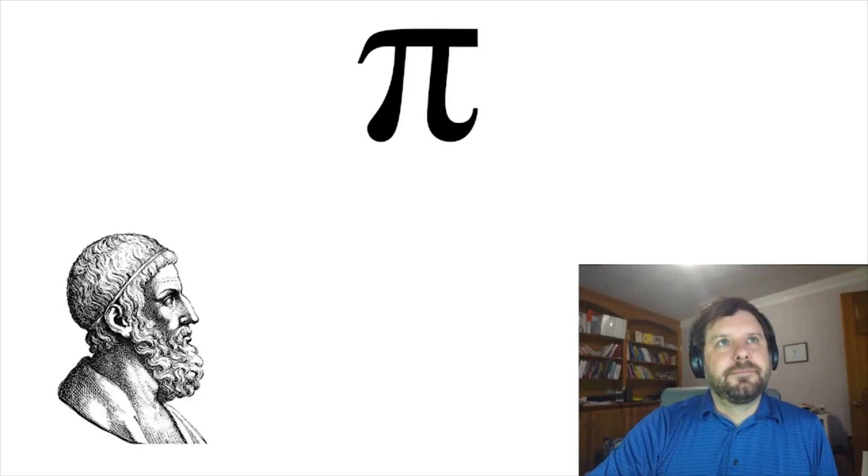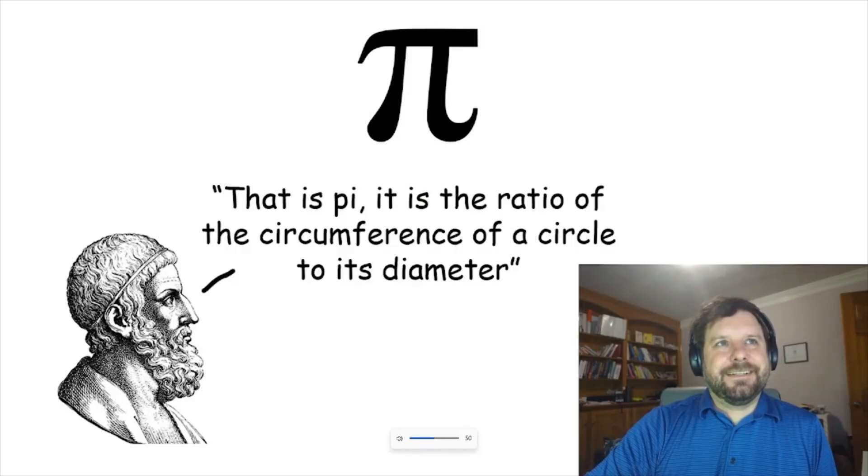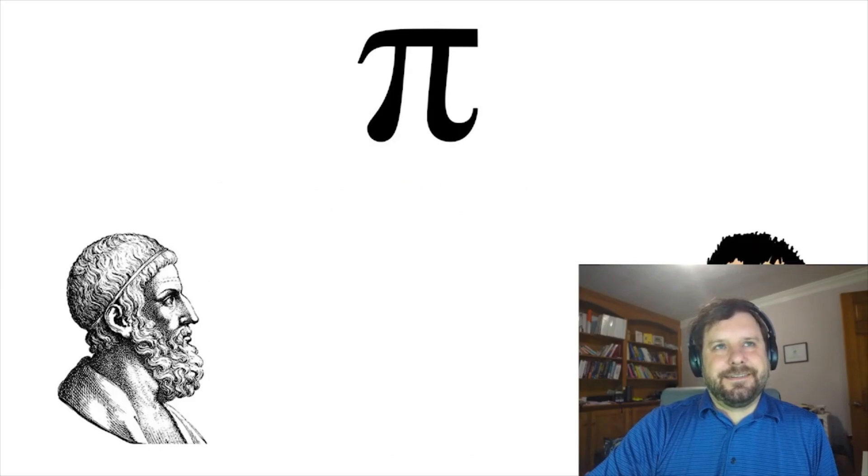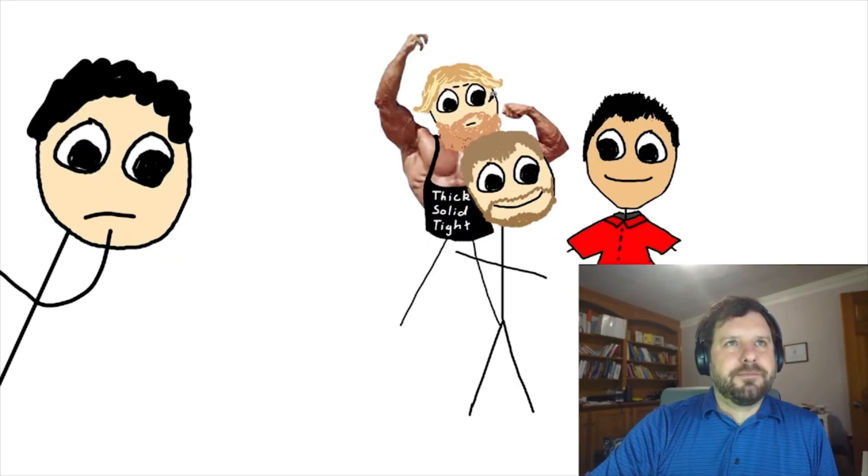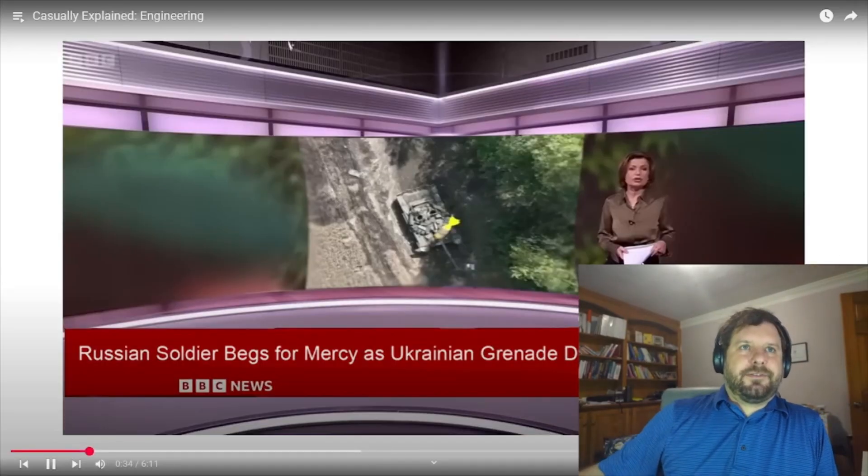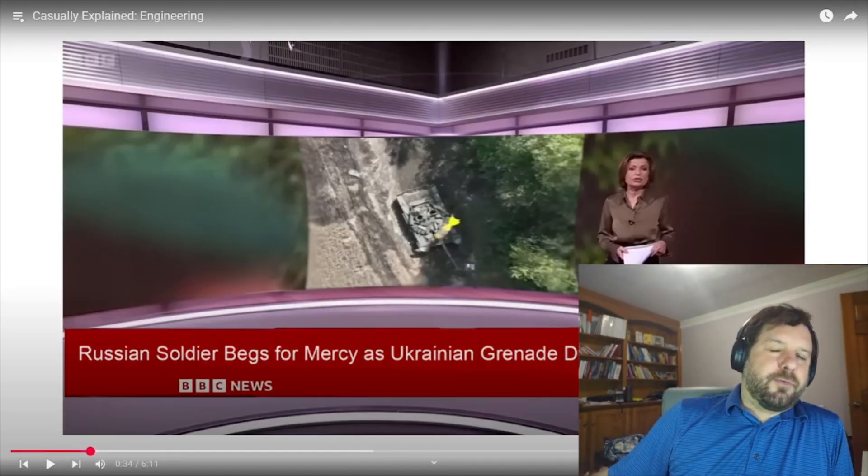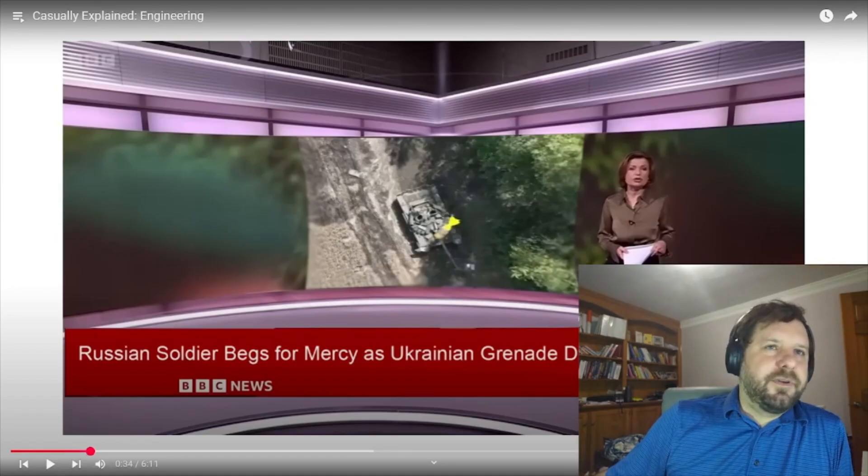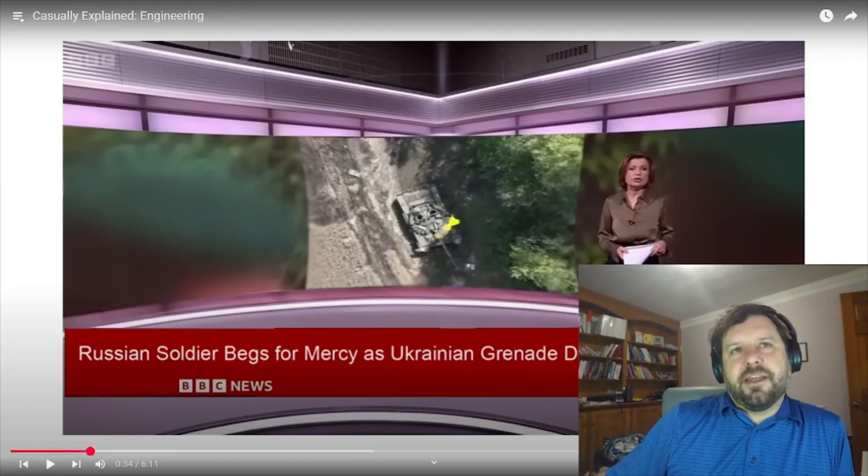What I like the most about engineering is that it's an extremely practical field. If you ask a mathematician what this symbol means, he'll say, that's pi. It's the ratio of the circumference of a circle to its diameter. But if you ask an engineer what this symbol means, he'll be like, oh yeah, that's three. 3.14159 if you want to get stupid with decimals that don't actually matter.